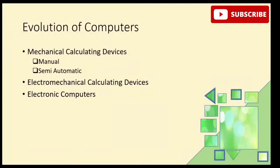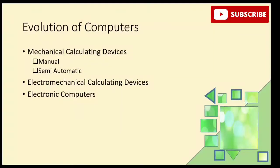Next, I will discuss electromechanical calculating devices. These devices use both electrical parts and mechanical parts together, converting electrical energy into mechanical motion. The calculation process is faster than in mechanical calculating devices, but essentially slow compared to electronic computers.